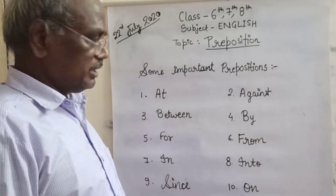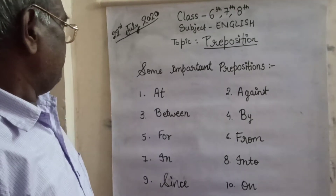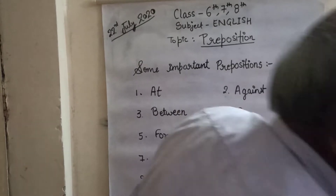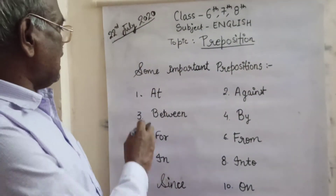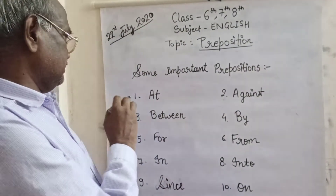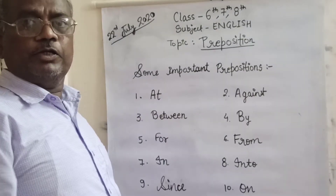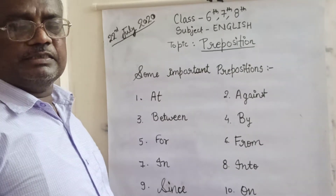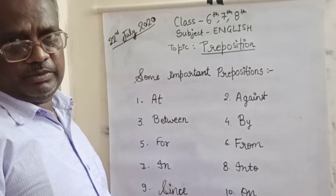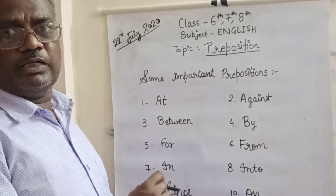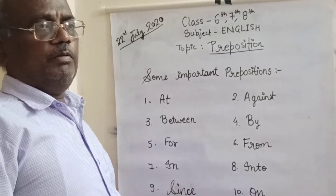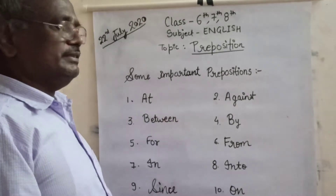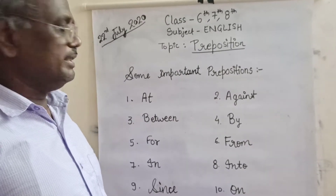Now here are some important prepositions. First, 'at': He is standing at the door. Who is knocking at the door? Next, 'between': Sita is sitting between Ram and Lachma. Mohan is sitting between Ram and Lachma.